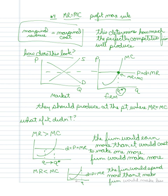Obviously this firm would want to make less. And as it makes less, it gets closer to the equilibrium.